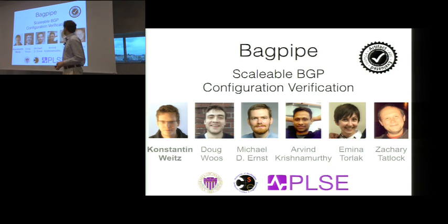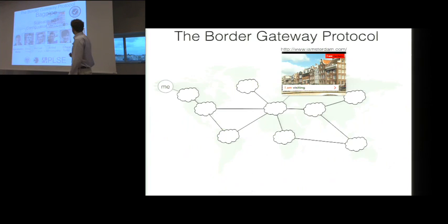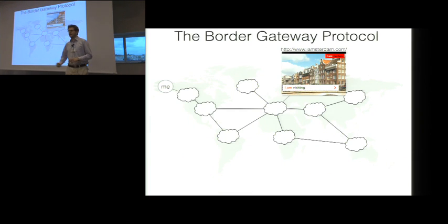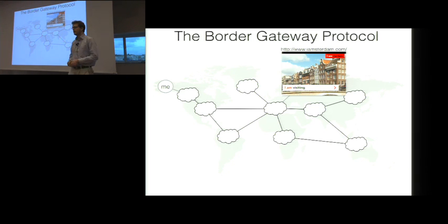I'm going to talk about Backpipe, which is a scalable tool to check BGP configuration. Since we're at UPSA here, I don't expect you to understand BGP, the border gateway protocol. So let me explain by an example.